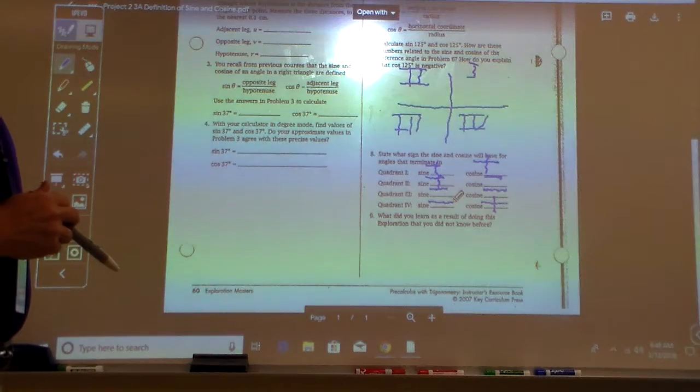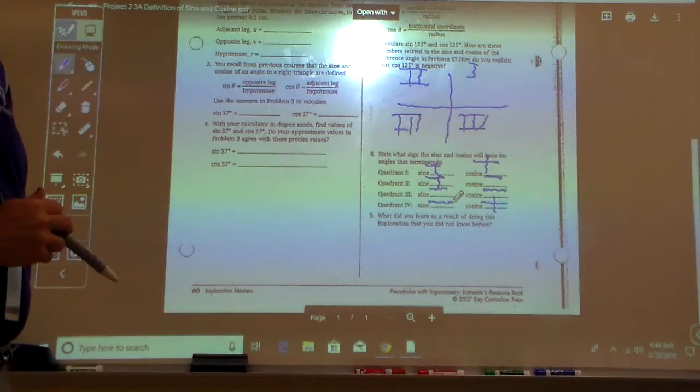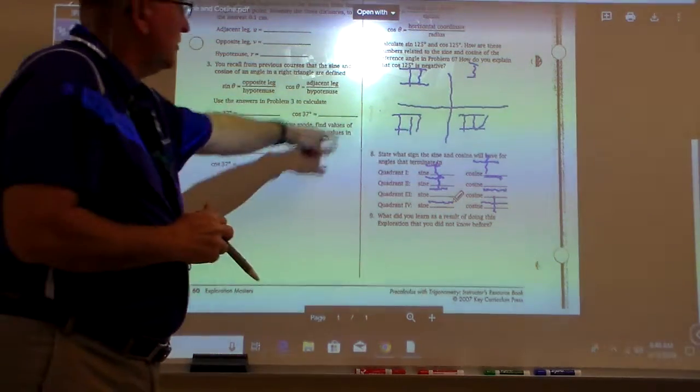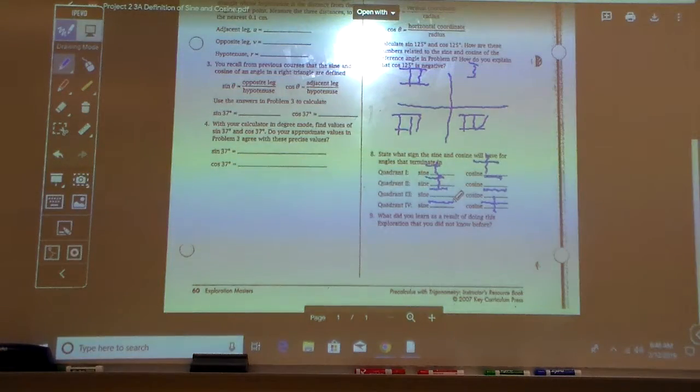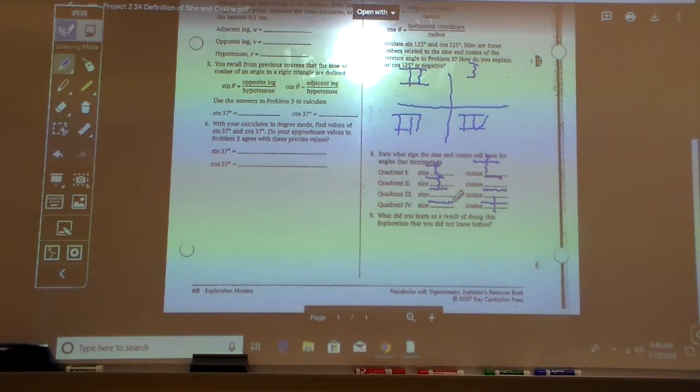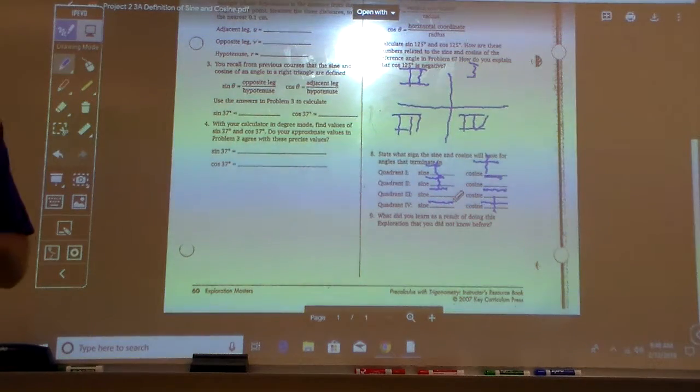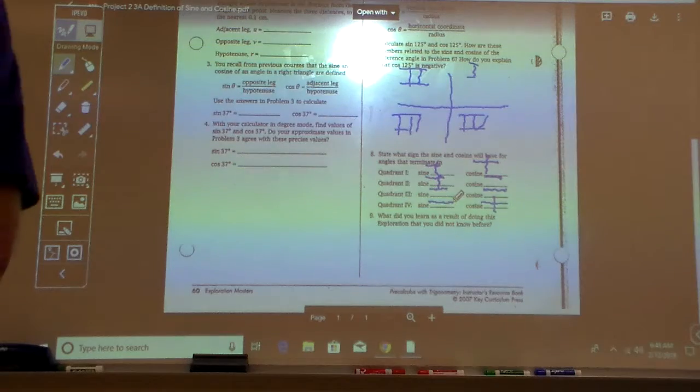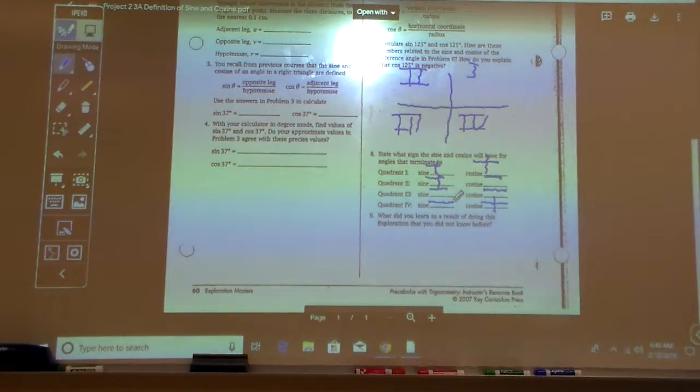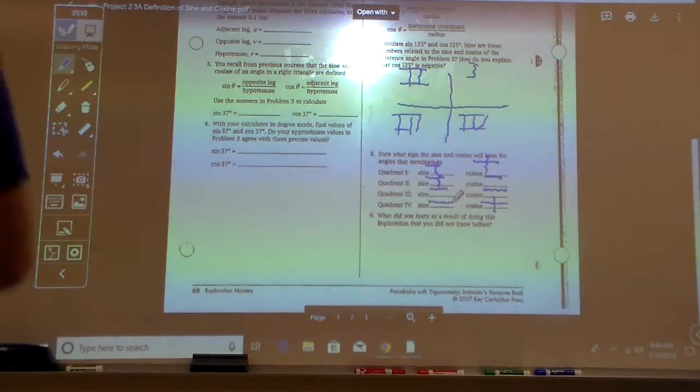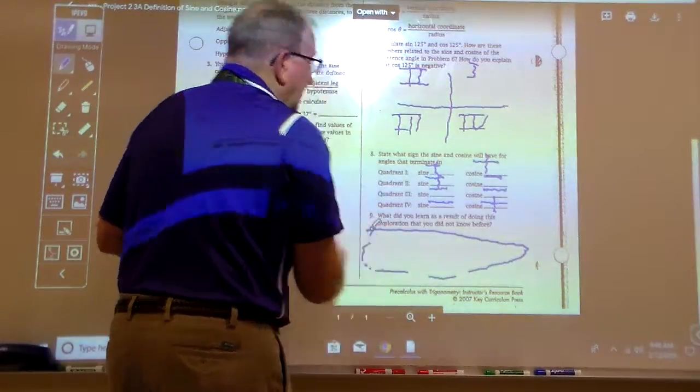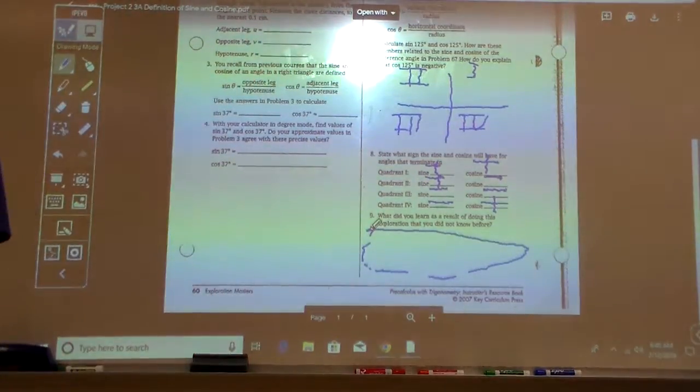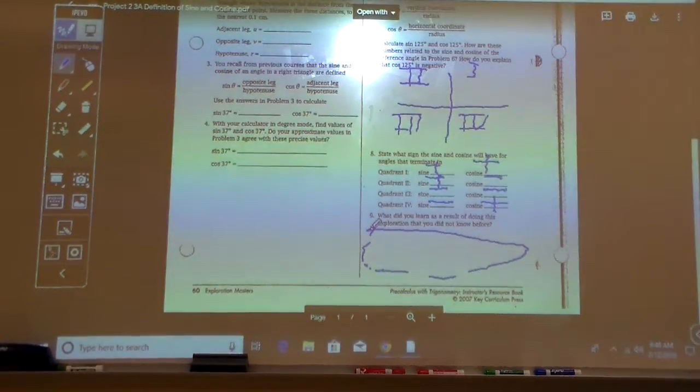And that's the reason that we have those values where 125, notice the reference angle for 125 and 55 was the same angle. The same values, it's just that when x is negative, your answers are negative for cosine. And so that's what reference angles kind of help us do, is find the values, and then by the quadrant it is, we determine whether the answers are positive or negative. Don't forget for question number nine to tell us what you learned. We answered all the questions. Do not leave that one blank. And tell me what you learned from this. Thank you very much.